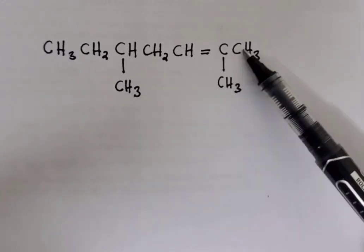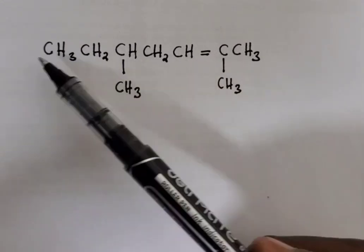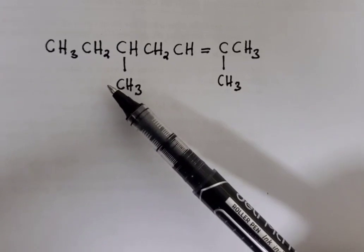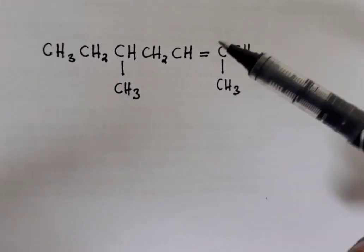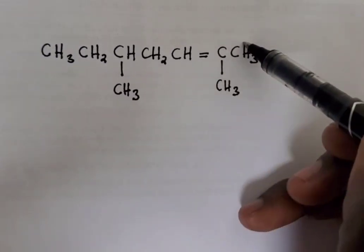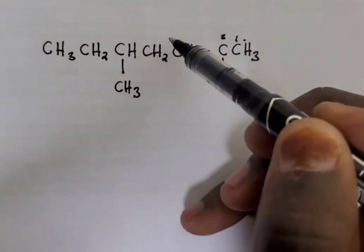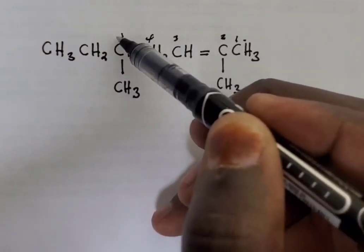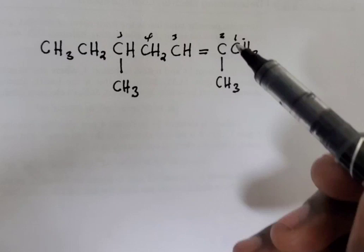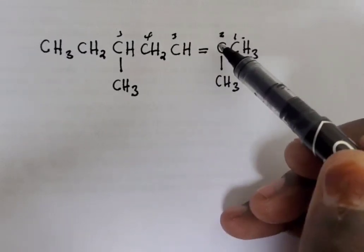How many methyl groups are attached to the longest chain? There are two of them, so that is dimethyl. Then where is the double bond? This is carbon number one, carbon two, carbon three, carbon four, carbon five, and so on. Our double bond is on carbon number two.